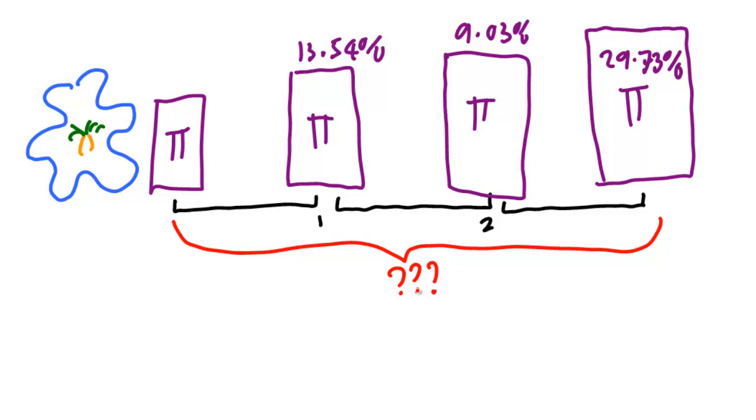Or in other words, what's its multiple year holding period return? This is basically a geometric average in reverse. Here's the general equation, where R is the annual return of the portfolio. So we have HPRM, which is the holding period return over multiple years.